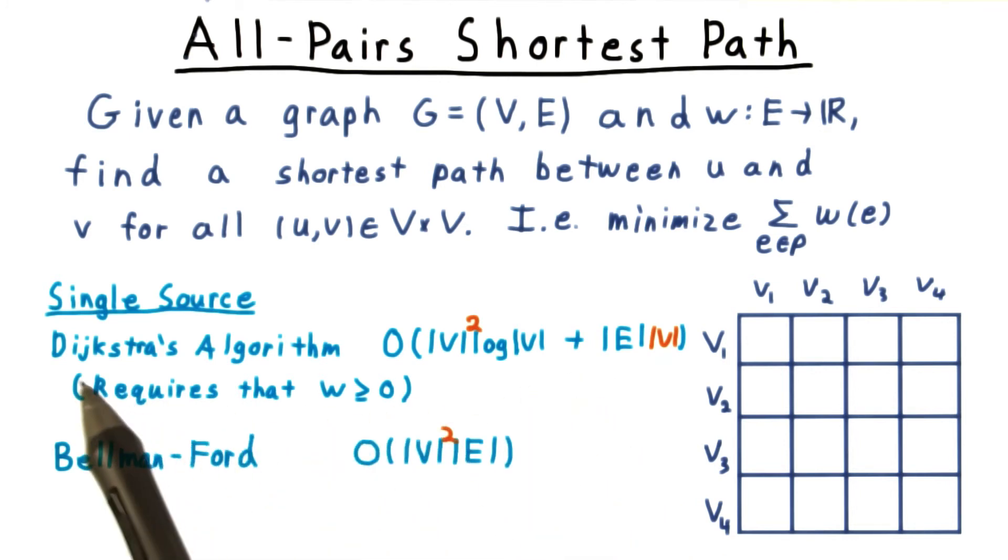Where the weights are non-negative, this strategy of using Dijkstra's algorithm is quite competitive. For the case where the weights could be negative, however, and especially when the graph is dense, we're looking at an algorithm that is on the order of V to the fourth for Bellman-Ford. Using dynamic programming, we're going to be able to do better.